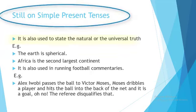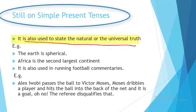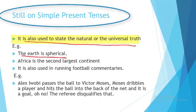We also use the simple present tense to state what you call universal truth or natural phenomena. For instance: 'The earth is spherical' — 'is' is the simple present tense verb. It's unchanging, it's a universal truth. 'Africa is the second largest continent' — that's another fact.